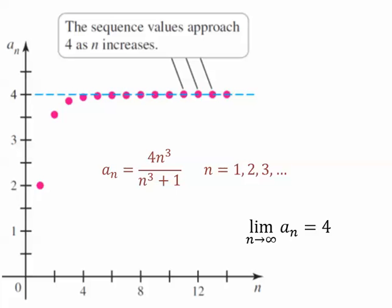The sequence values approach 4 as n increases. We say that the limit as n goes to infinity of a sub n is equal to 4. So 4 is the limiting behavior.